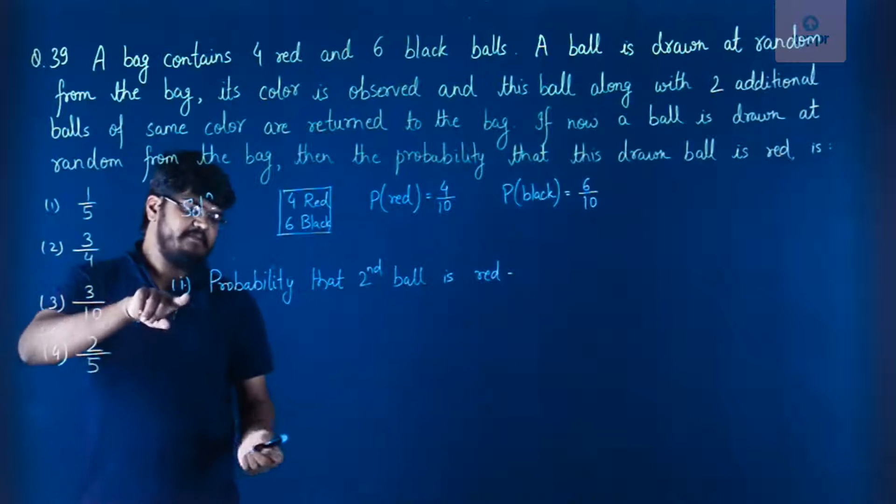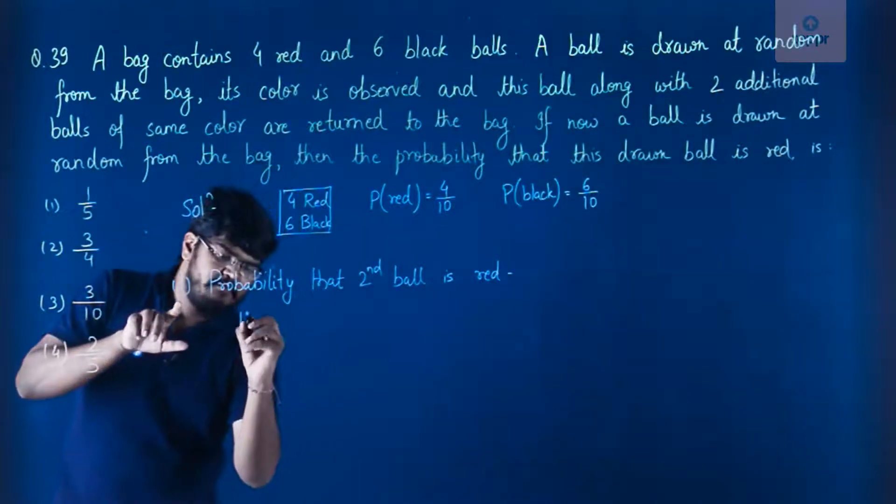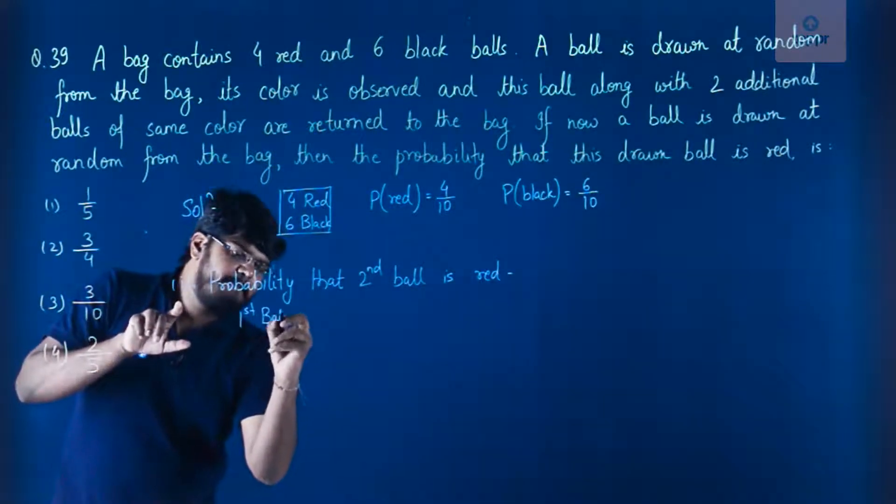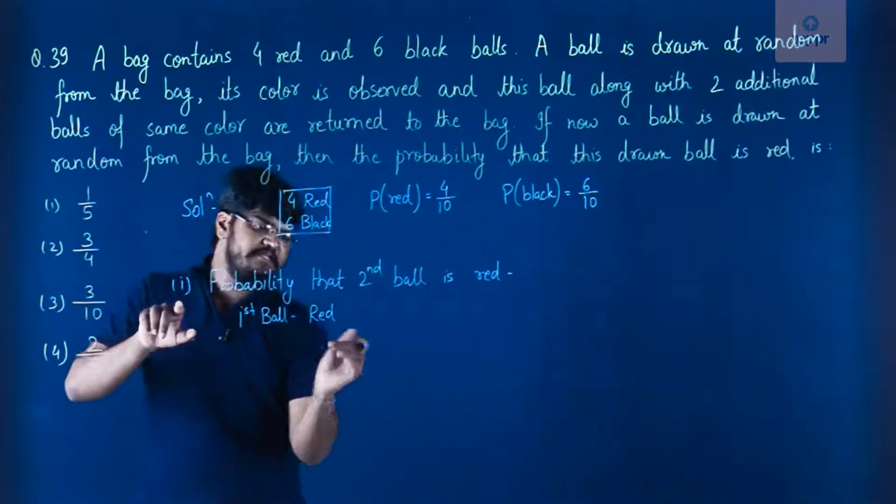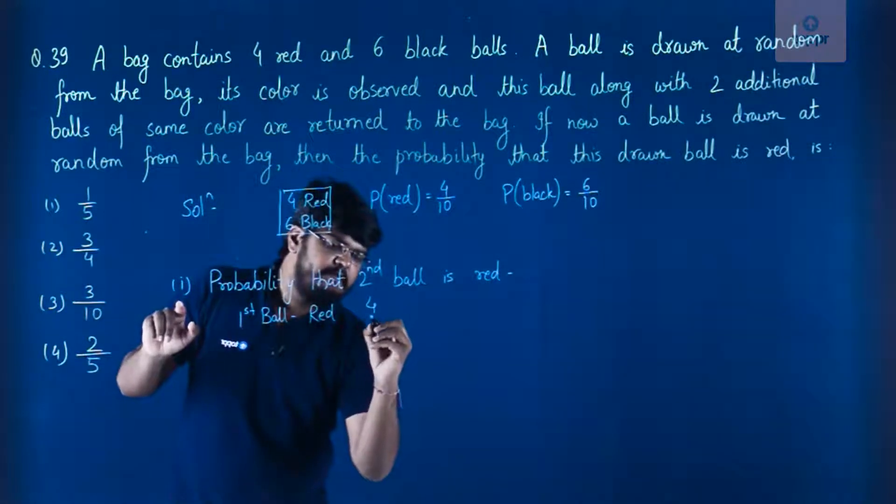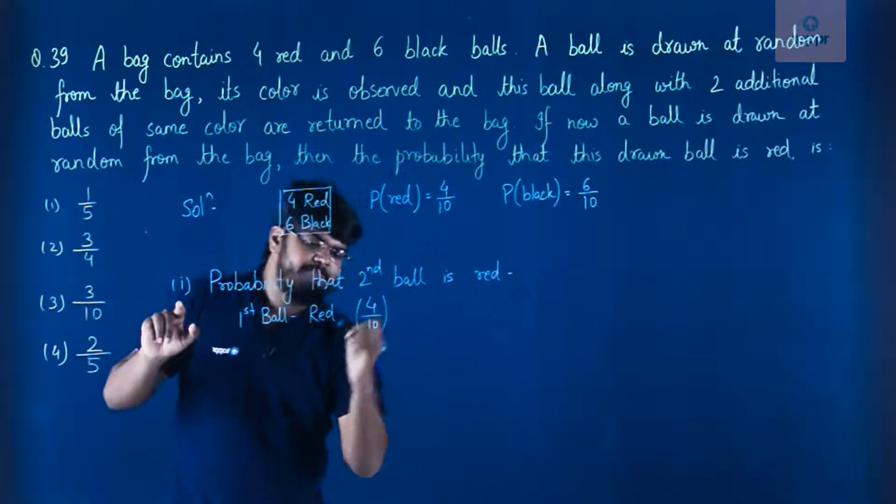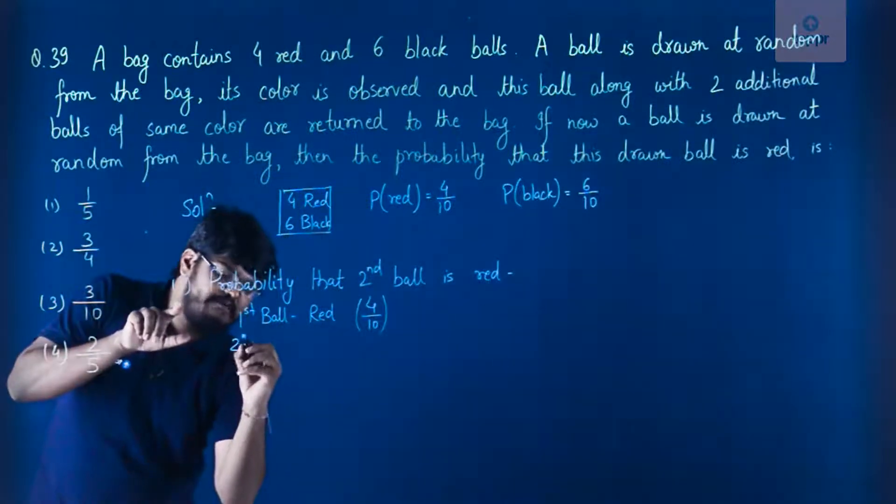So basically, probability that second ball is red. This will happen in two cases. First, first ball is red. So the probability for this first ball red is 4 by 10, and now second ball is red.